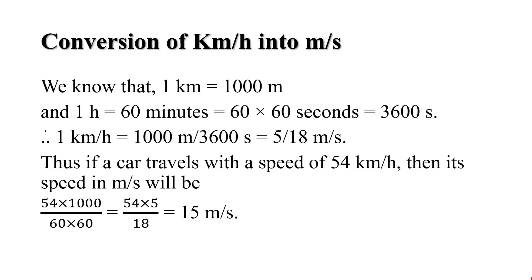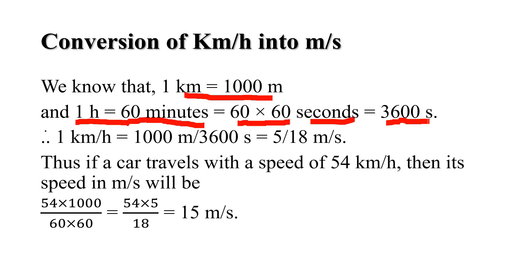Now let us understand the conversion of km per hour into meter per second. We know that 1 km equals 1000 meters, and 1 hour equals 60 minutes, which equals 60 × 60 = 3600 seconds. So 1 km per hour equals 1000 meters upon 3600 seconds, which equals 5/18 meter per second. This means 1 km per hour is equal to 5/18 meter per second.